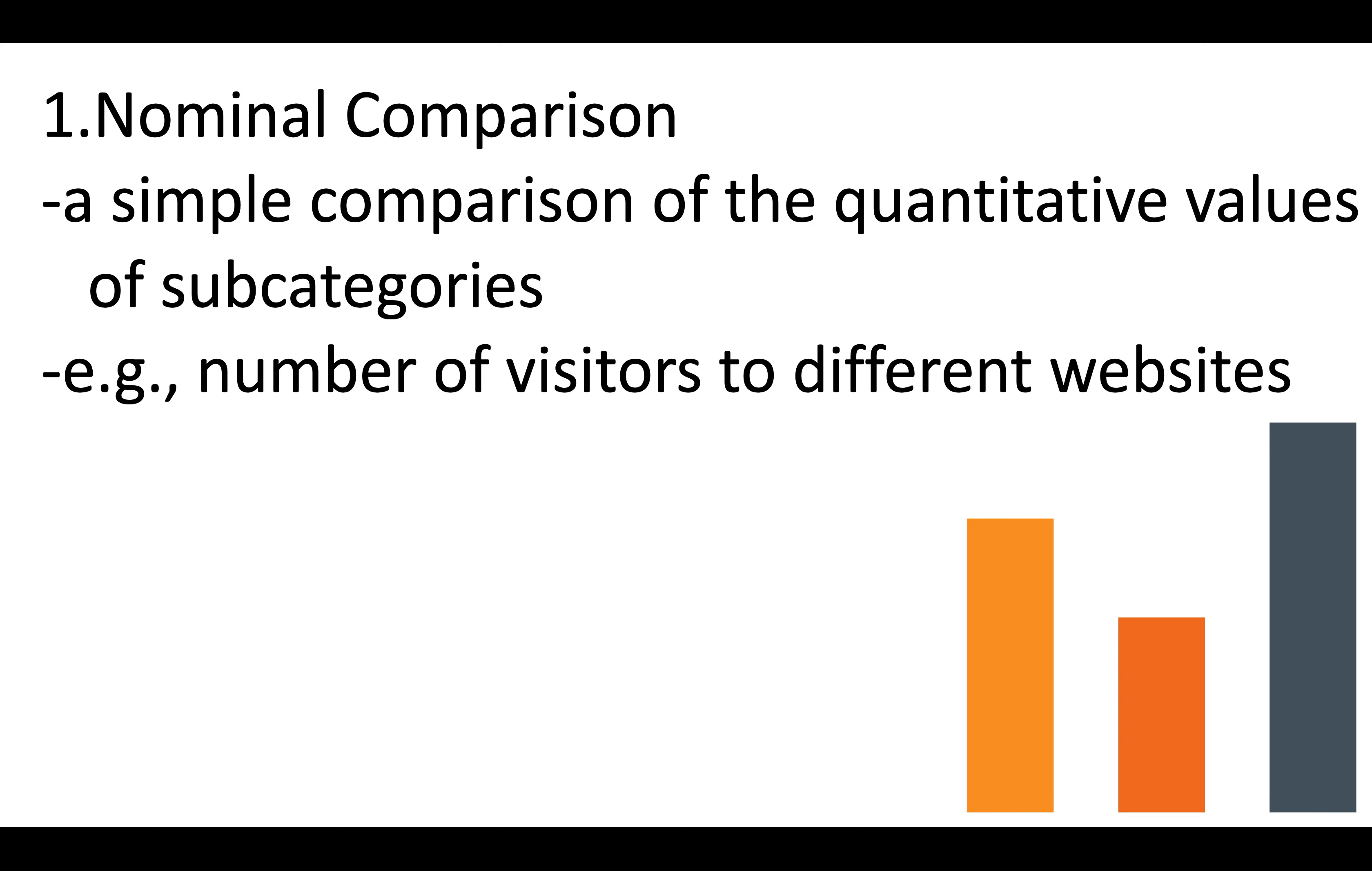First is nominal comparison. This is a simple comparison of the quantitative values of different subcategories. For example, you could compare the number of visitors to different websites to see how they compare.